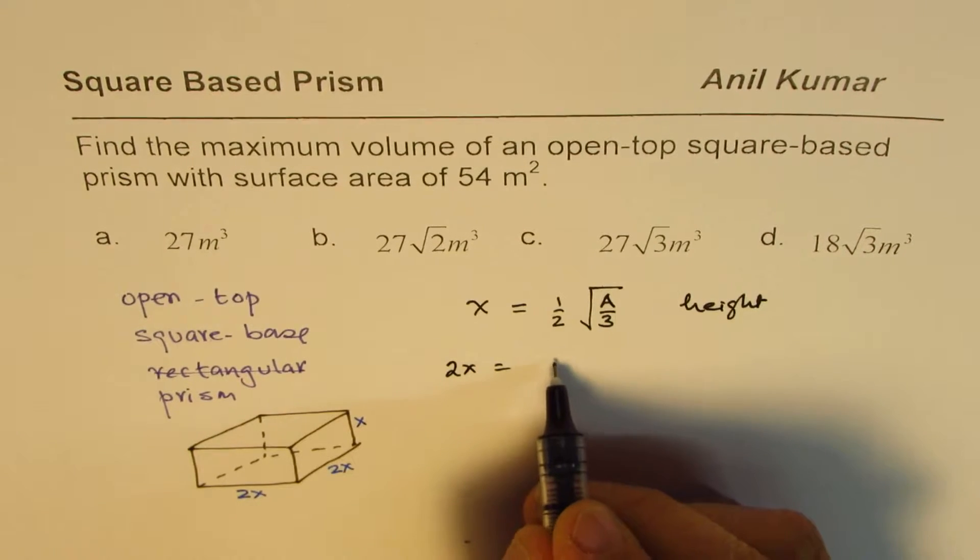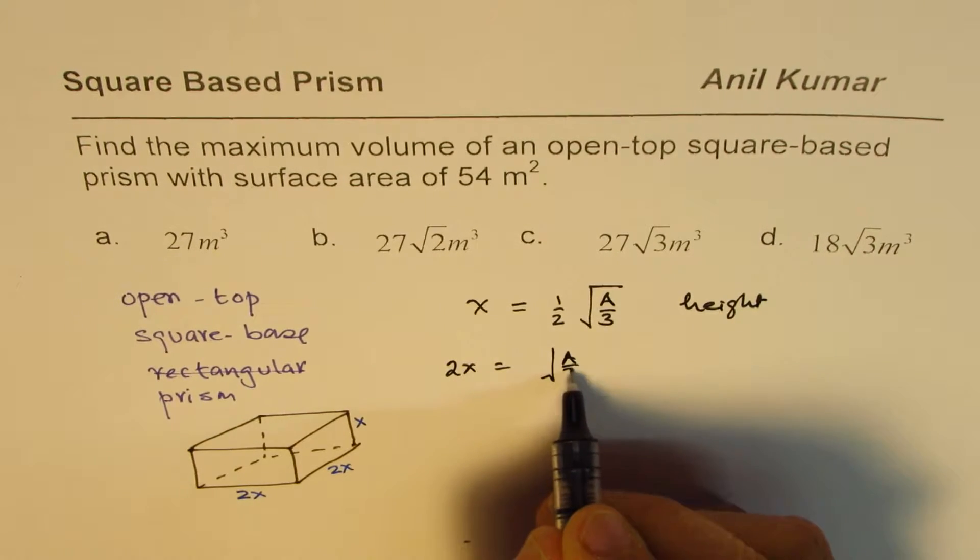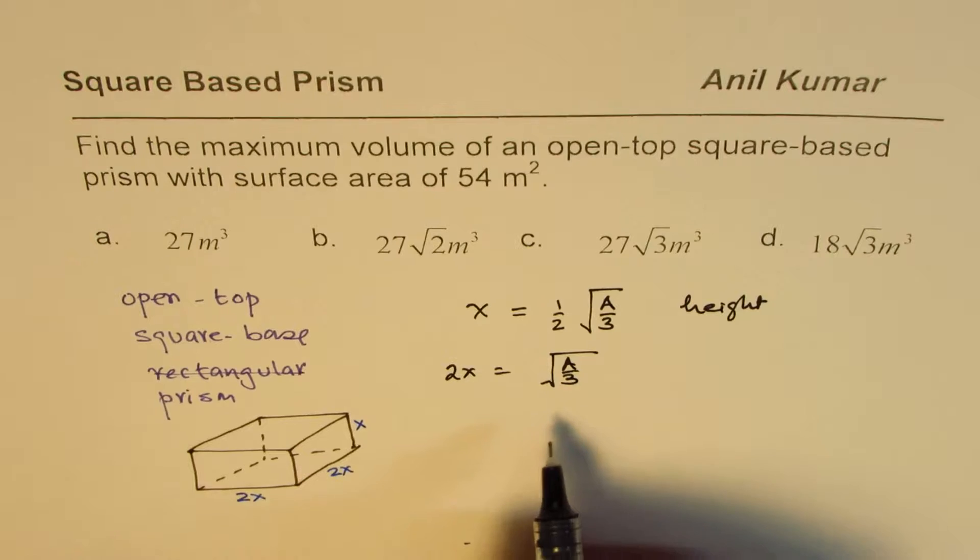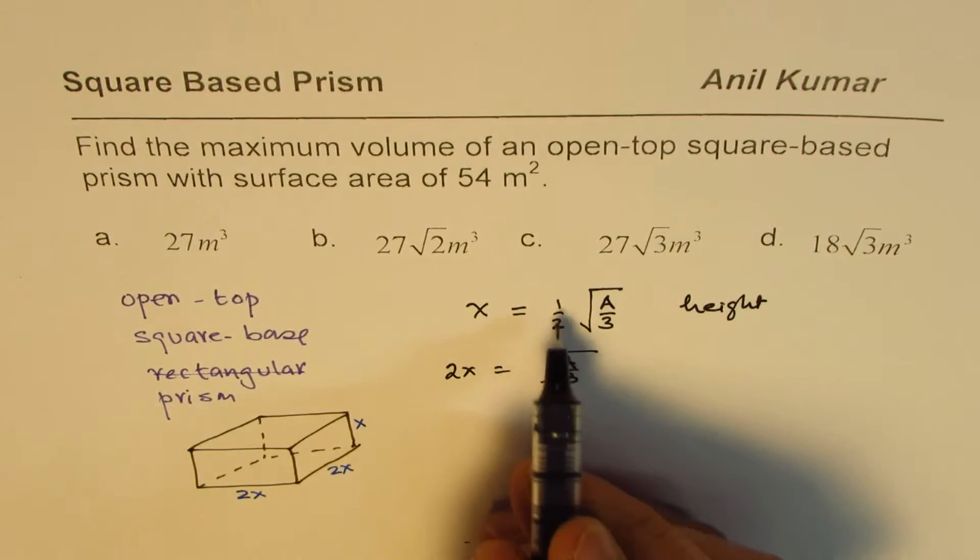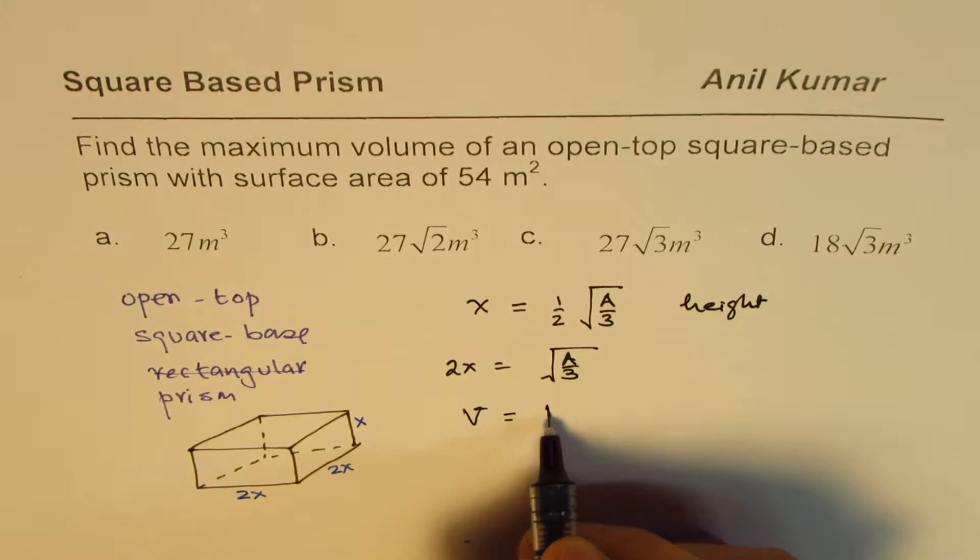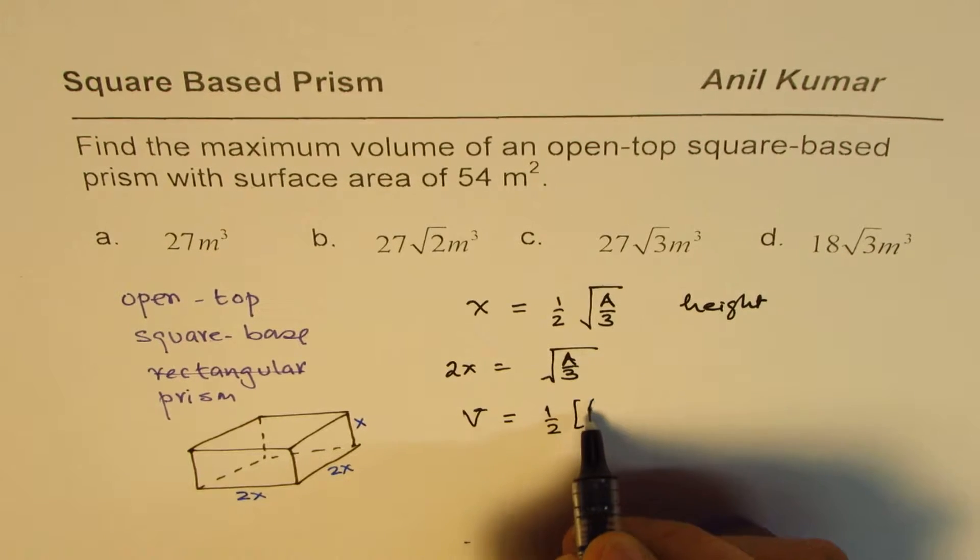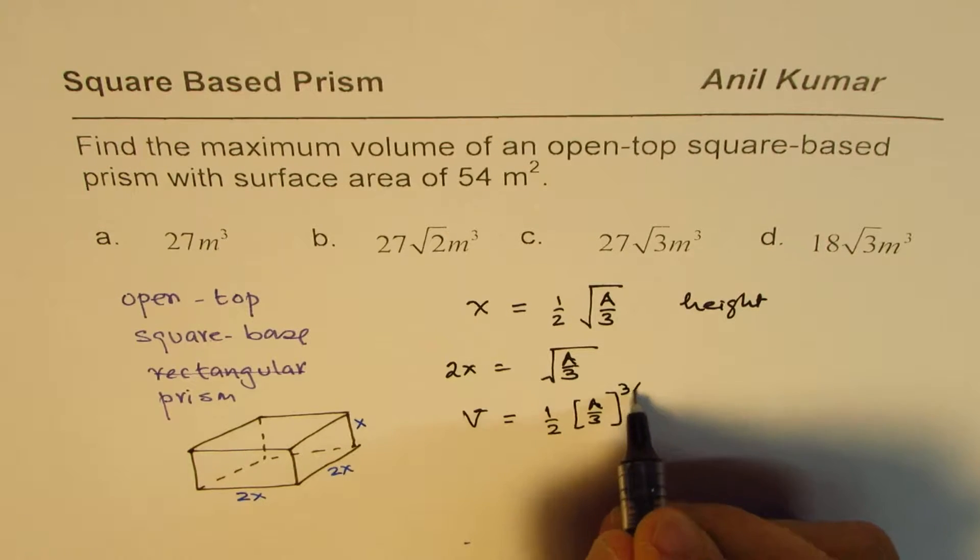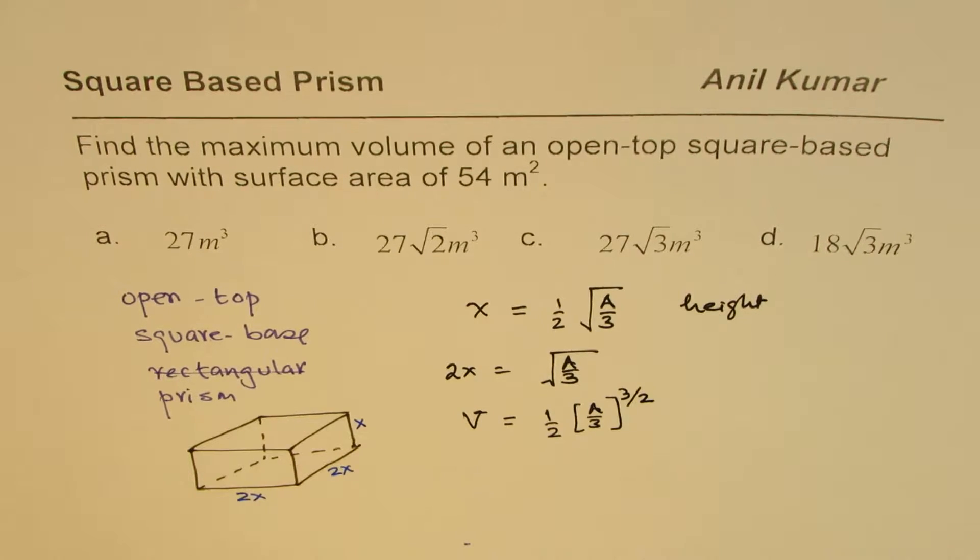So that is the height, and as far as the base is concerned, there will be two times x, which will be square root of A over 3. These are the formulas which can help you find the solution. And if you multiply this times this and that, you get volume, and the formula for volume is half of A over 3 to the power of 3/2.